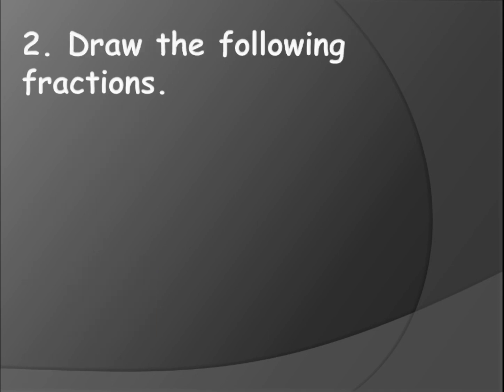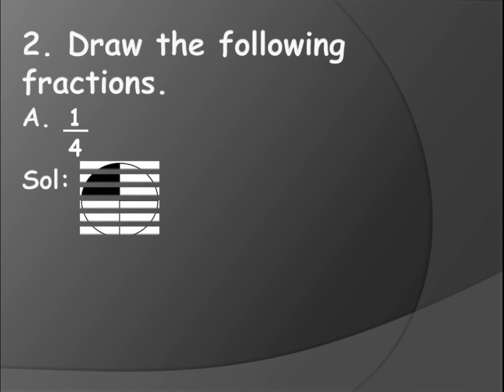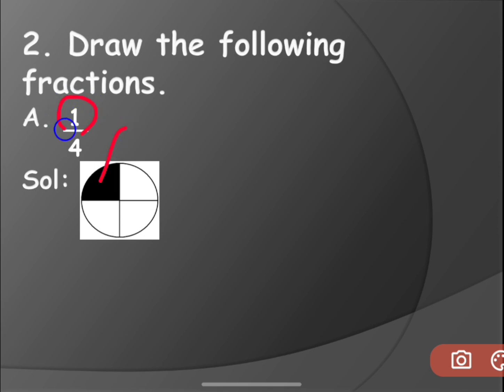Now let's see the next question. Here they have given the fraction - we have to draw the shape and color it. Divide into those equal parts which are in the denominator and color the number of parts which are in the numerator. So here you have one by four. You can take any shape - it can be a rectangle, square, circle, pentagon, hexagon, any shape. But that shape should be divided into four equal parts, because the denominator is four. I have taken a circle which I have divided into four parts and colored one part, because the numerator is one.